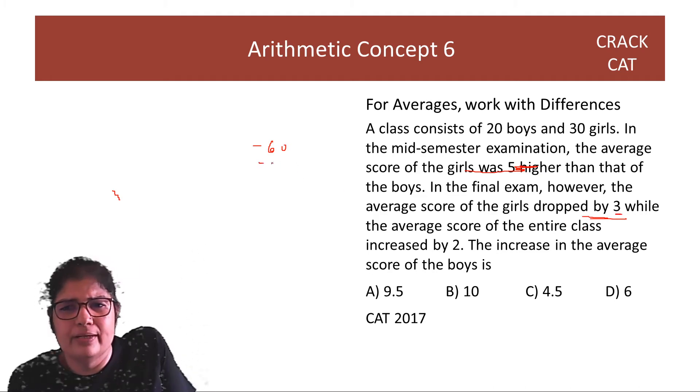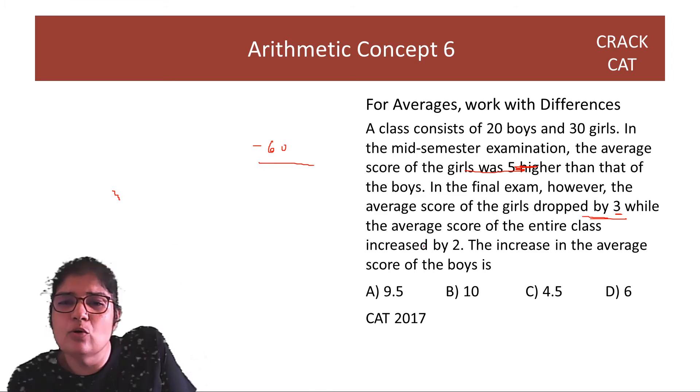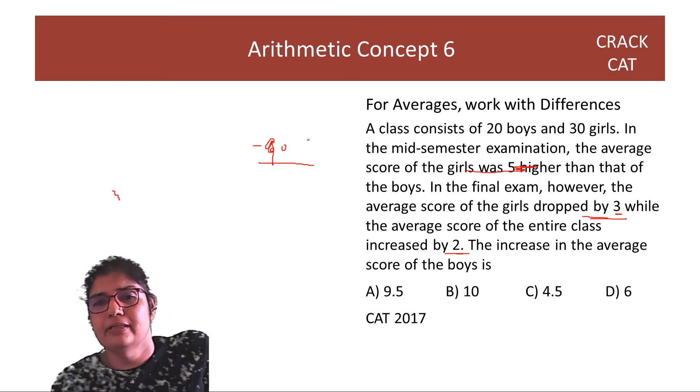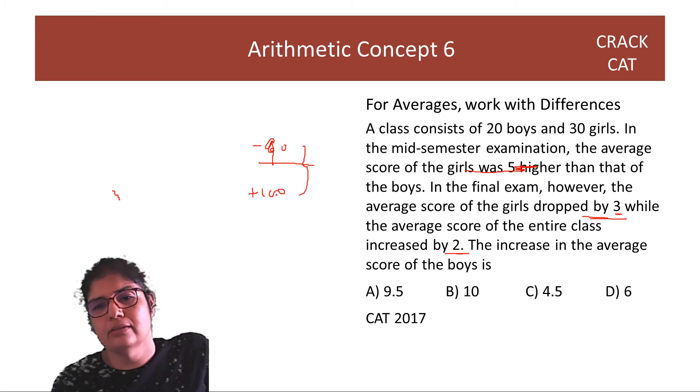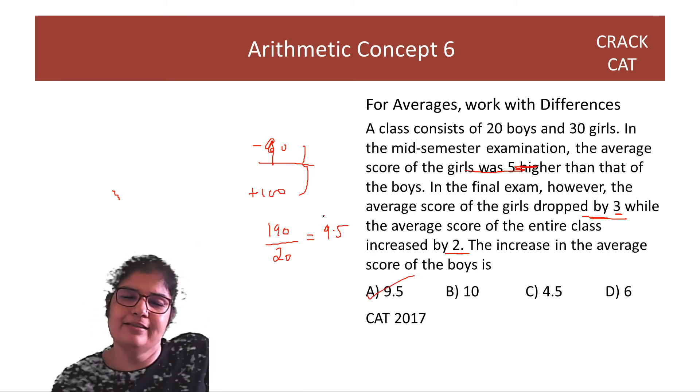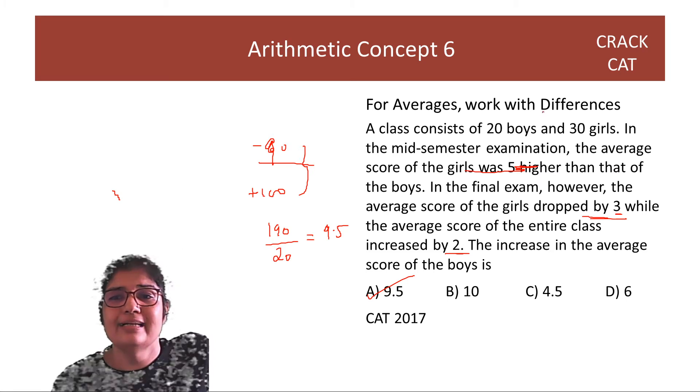That means overall the sum should have dropped by 90. Average score of the girls dropped by 3. So, total must have dropped by 90. But average score of the whole class, 30 into 3, went up by 2. So, actually overall there is a plus 100. So, the difference of 190 is coming because of the 20 boys. And hence boys' average must have increased by 9.5. So, you see hardly anything to write, hardly anything to solve. It becomes very easy if you work with differences instead of working with the full numbers.